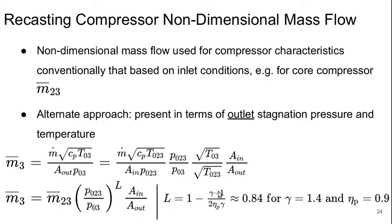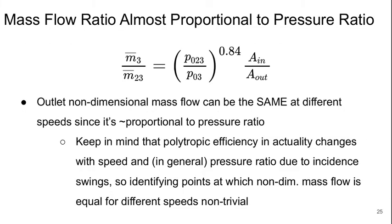L has to do with gamma and the efficiencies. If the polytropic efficiency is 90% and gamma is 1.4, then L is about 0.84—not exactly linear, but pretty close, so the mass flow ratio is almost proportional to the pressure ratio. This means the outlet non-dimensional mass flow can be the same at different rotational speeds since it's roughly proportional to the pressure ratio. Keep in mind that in reality the polytropic efficiency typically changes with rotational speed and also with pressure ratio due to variations in incidence, so identifying points where the outlet non-dimensional mass flow is equal for different speeds is actually a non-trivial thing to do.